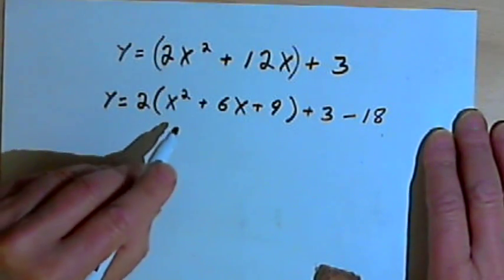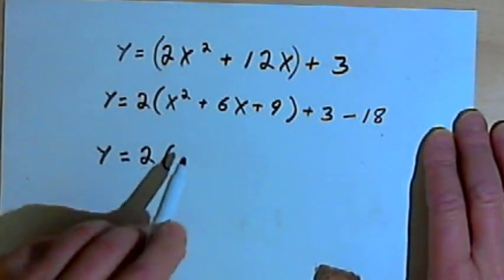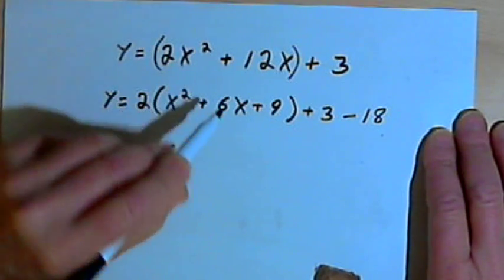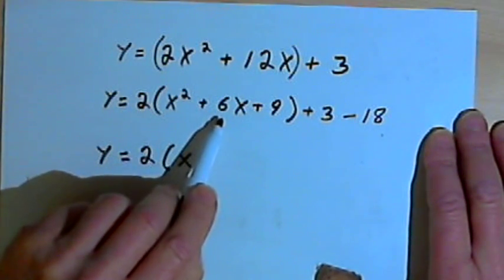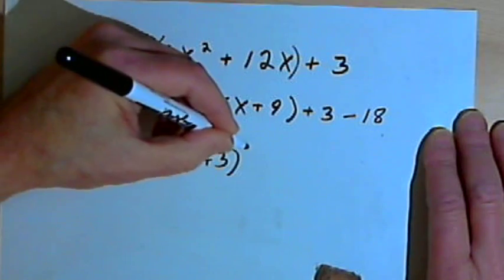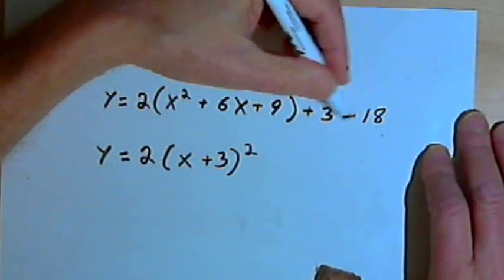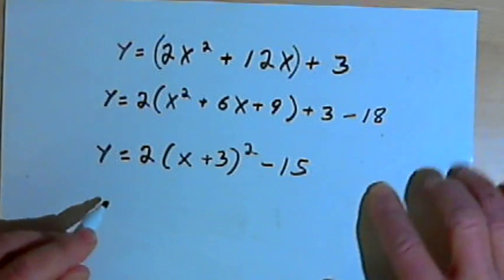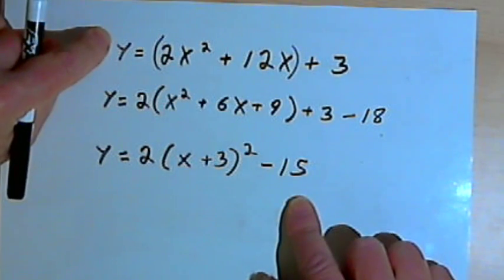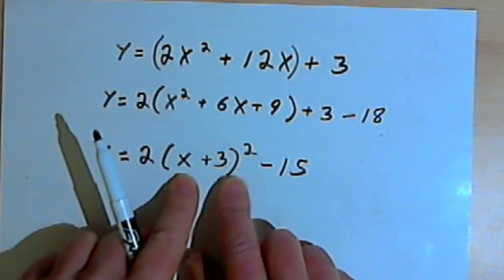Now I'll rewrite this with a binomial squared. I'm going to write y equals 2 times — instead of x squared plus 6x plus 9 — I'll have the binomial x, and then I want one-half of the middle coefficient: that'll be one-half of 6, which is 3, so it's x plus 3 squared. Then I'm going to take that plus 3 and minus 18 at the very end and make that just minus 15. And now I've got the vertex form: y equals 2 times x plus 3 squared minus 15.